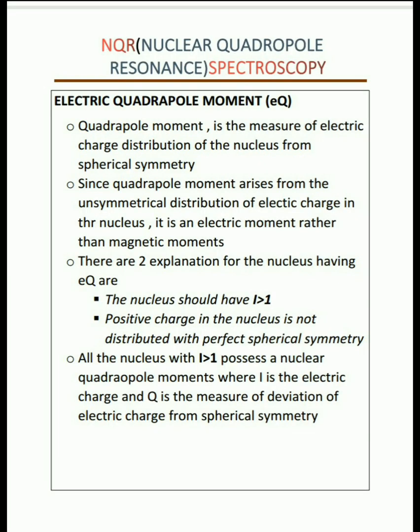We already know that nuclei are not always spherical. Therefore, there arises some electrical quadrupole moment. The electrical quadrupole moment is a parameter to describe the electronic charge distribution. For a spherical nucleus, the spin should be half or zero. Any nucleus with more than one unpaired nuclear particle will have a charge distribution that results in an electrical quadrupole moment. Nuclei with a spin greater than or equal to one — such as N14, Cl35, and Cu63 — have an electric quadrupole moment.